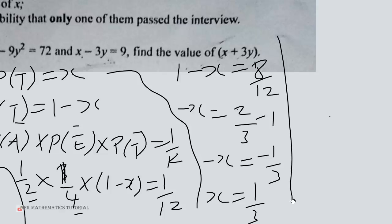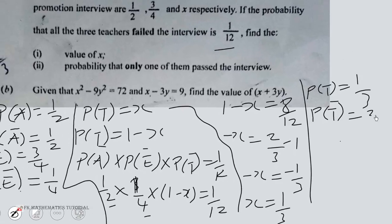So probability that T will pass is 1 over 3, and probability that T will fail is 2 over 3.